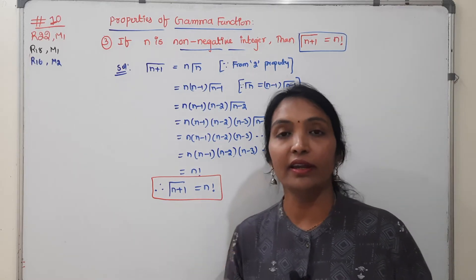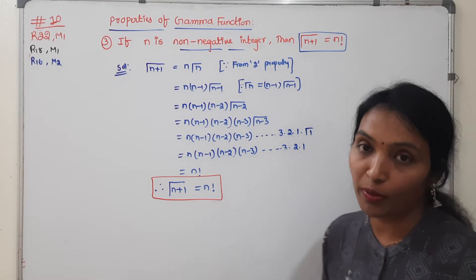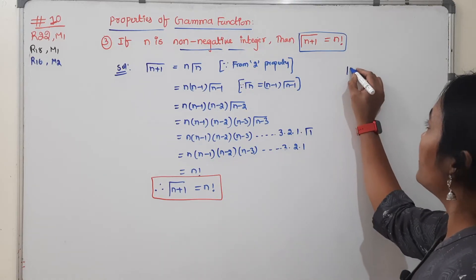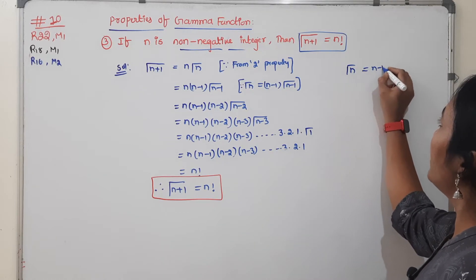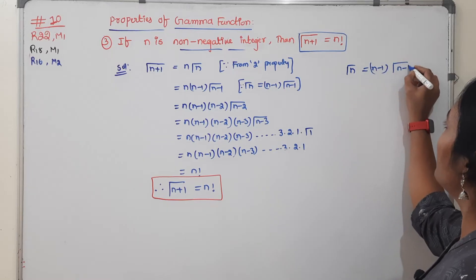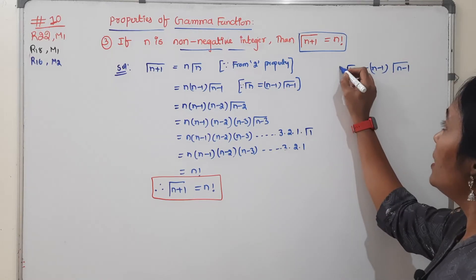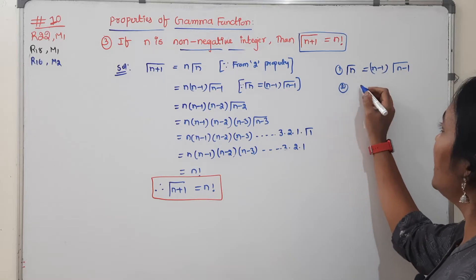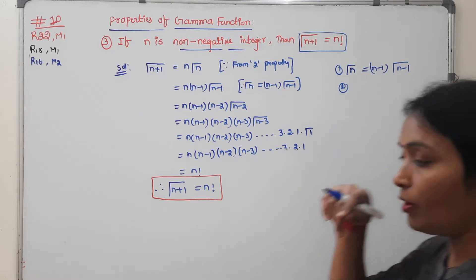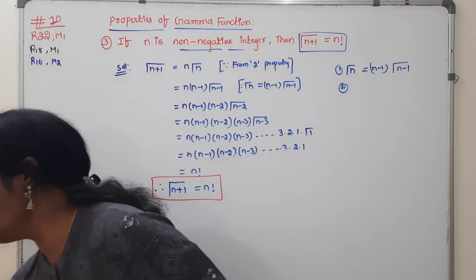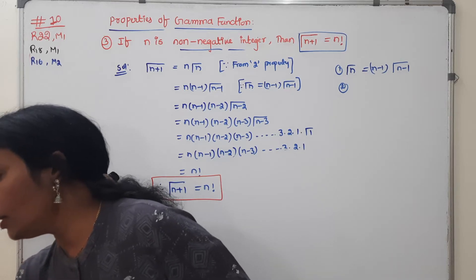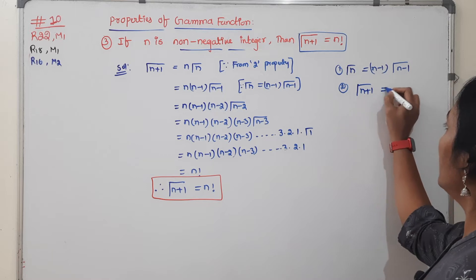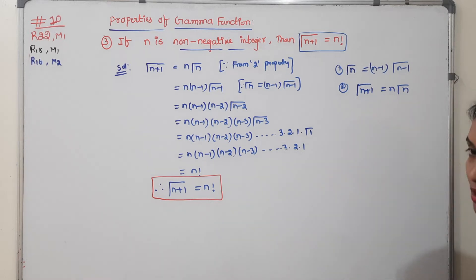The first two properties: the first property is Gamma(n) = (n−1) × Gamma(n−1). The second property: Gamma(n) = (n−1) × Gamma(n−1), and Gamma(n+1) = n × Gamma(n).